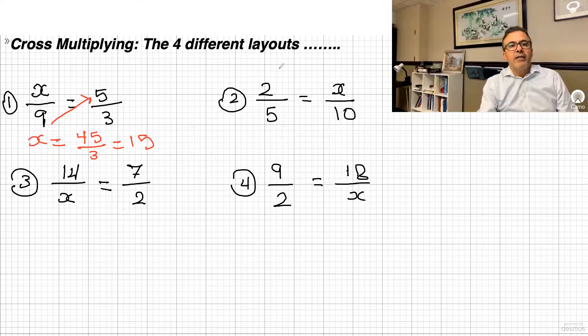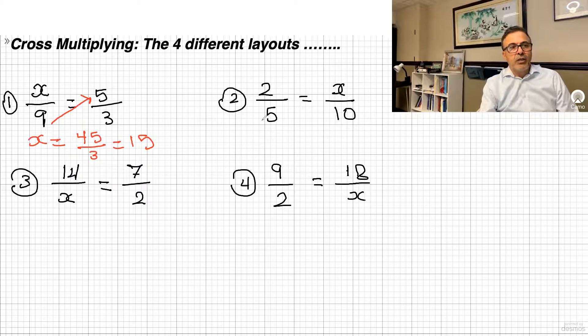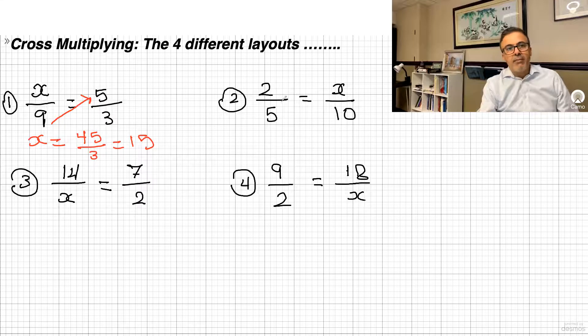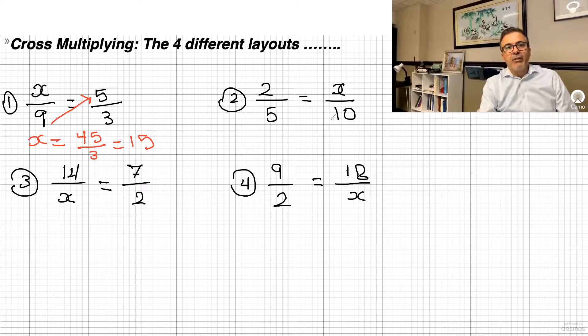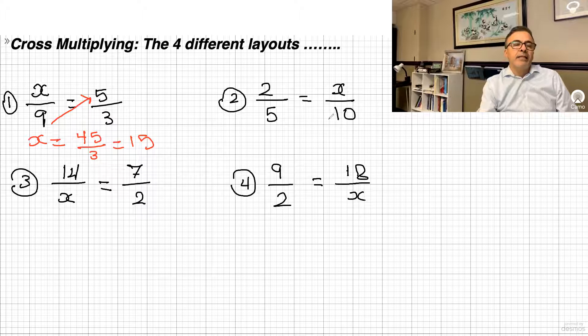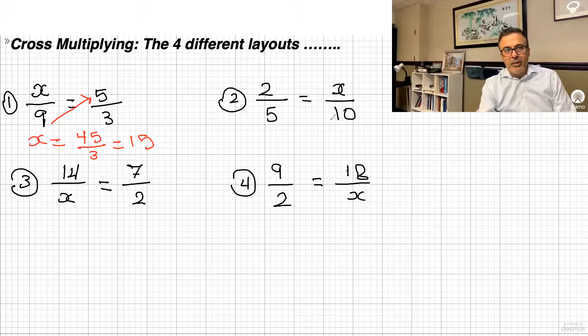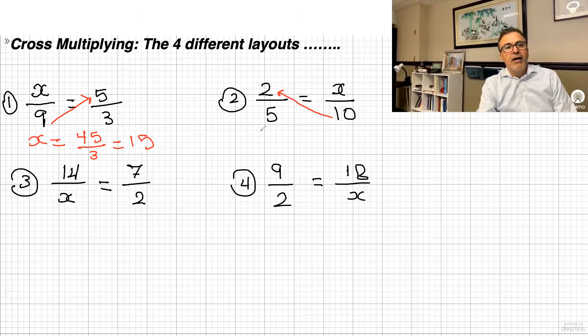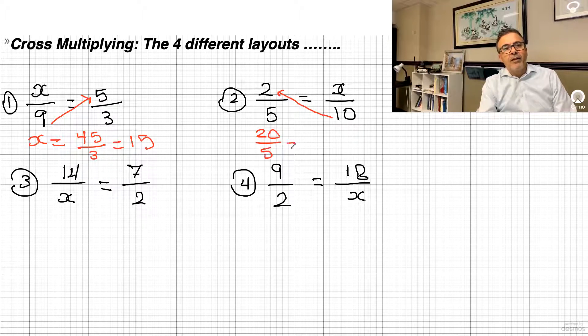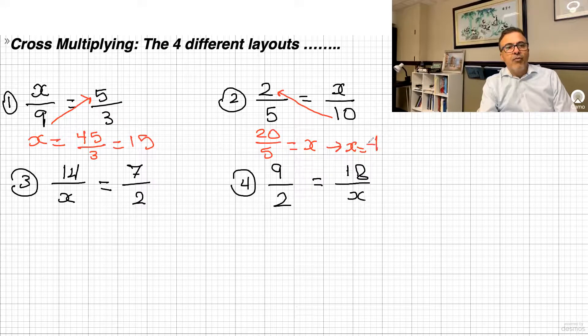How about if the equation is written backwards like this, where the x is on the right-hand side of the equation? The same thing applies. You want to isolate the x. Anything that wants to cross the equal sign, when it crosses, if it's on the bottom, it goes to the top. So now it's on the bottom, just goes to the top right there. You'll have 20 over 5 equals x, and therefore x equals 4.